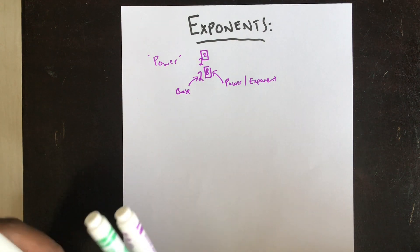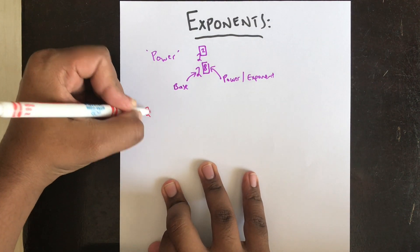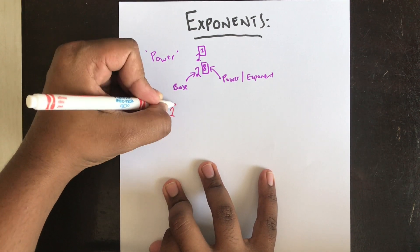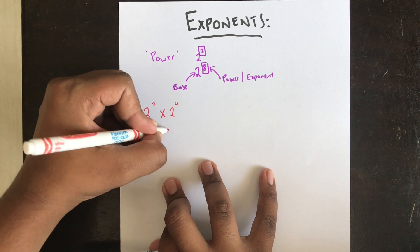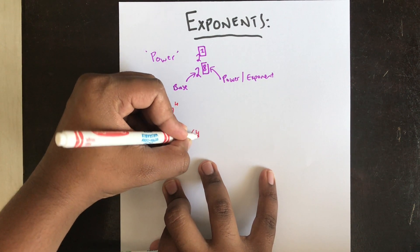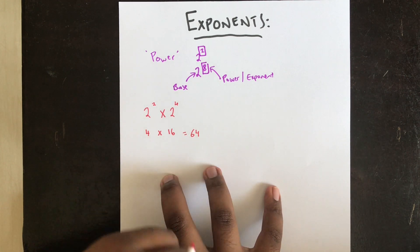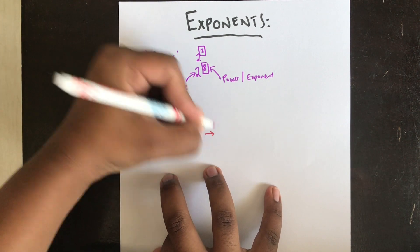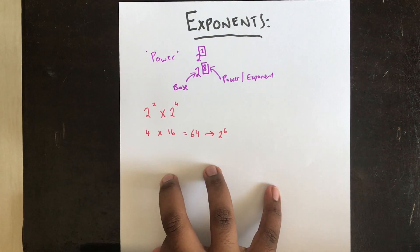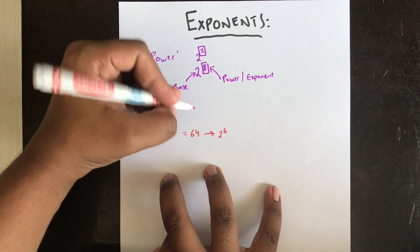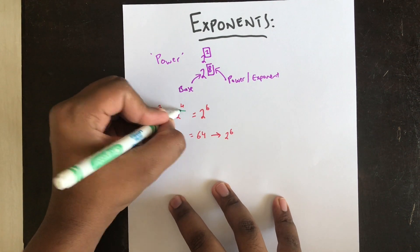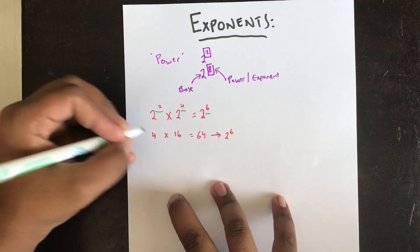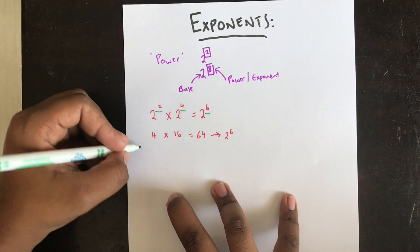Suppose we have something like 2 power 2 times 2 power 4. This is basically 4 times 16, which equals 64. 64 can also be expressed as 2 power 6. So 2 power 2 times 2 power 4 gives us 2 power 6. We notice that 2 and 4 add up to give 6.